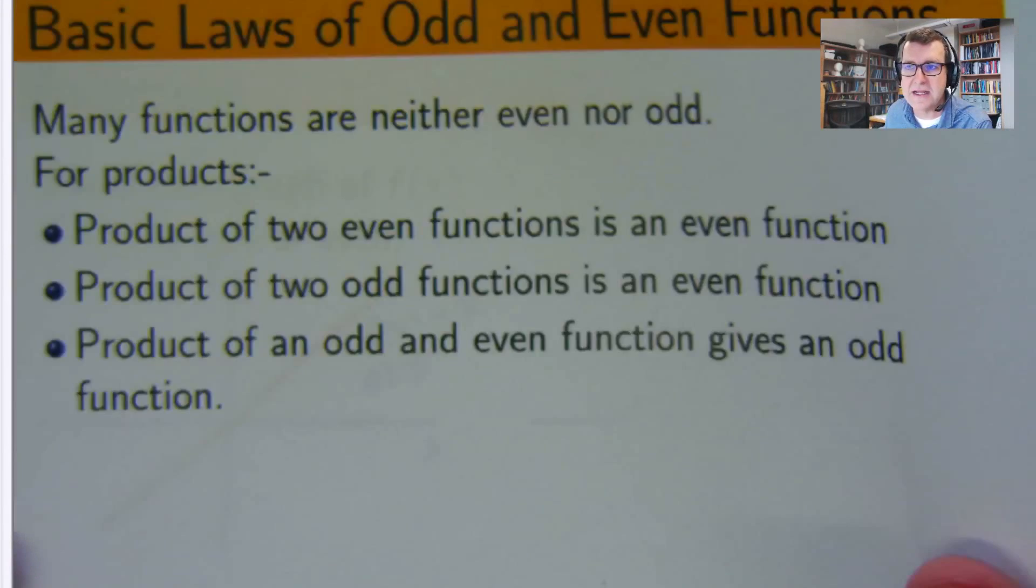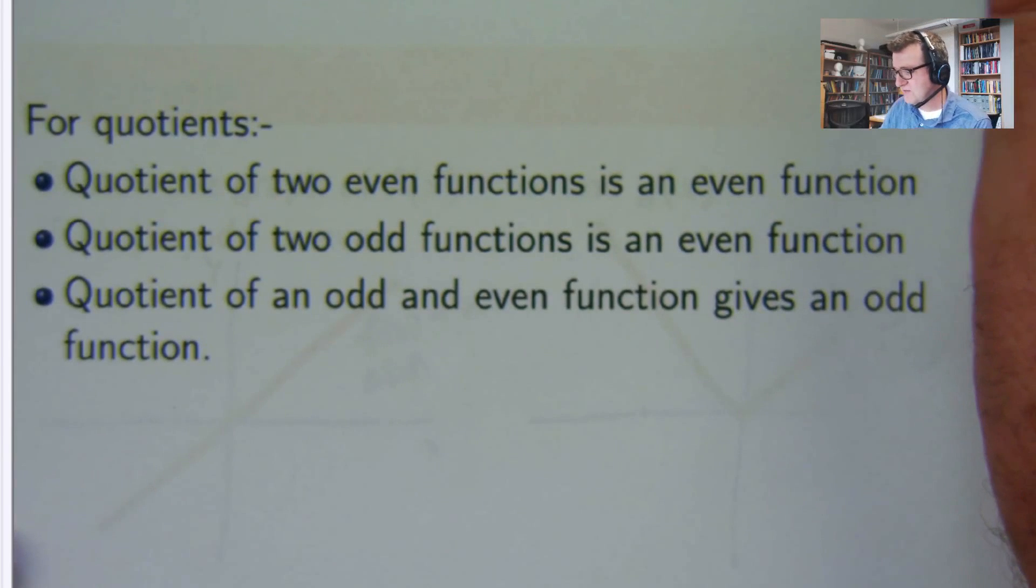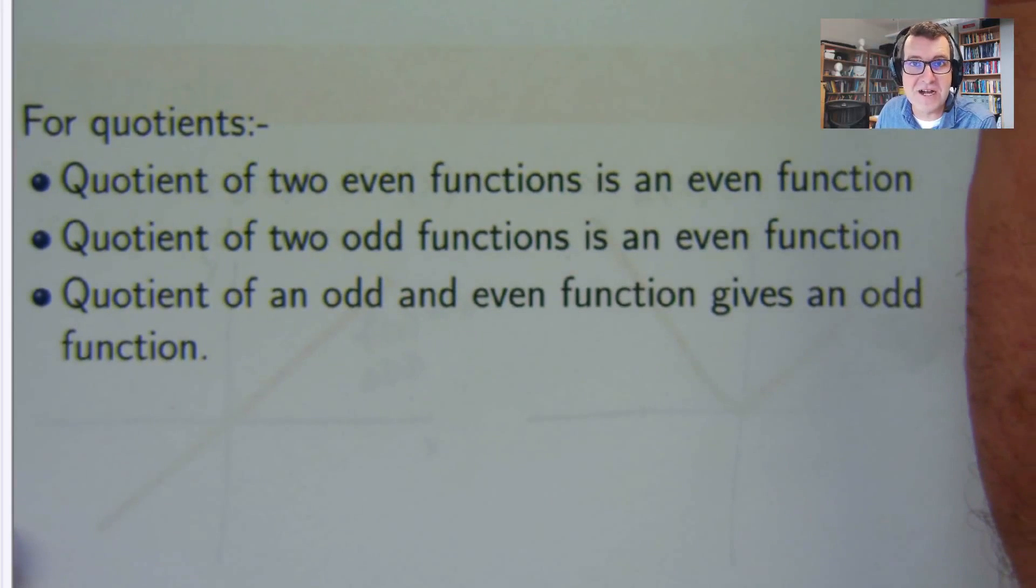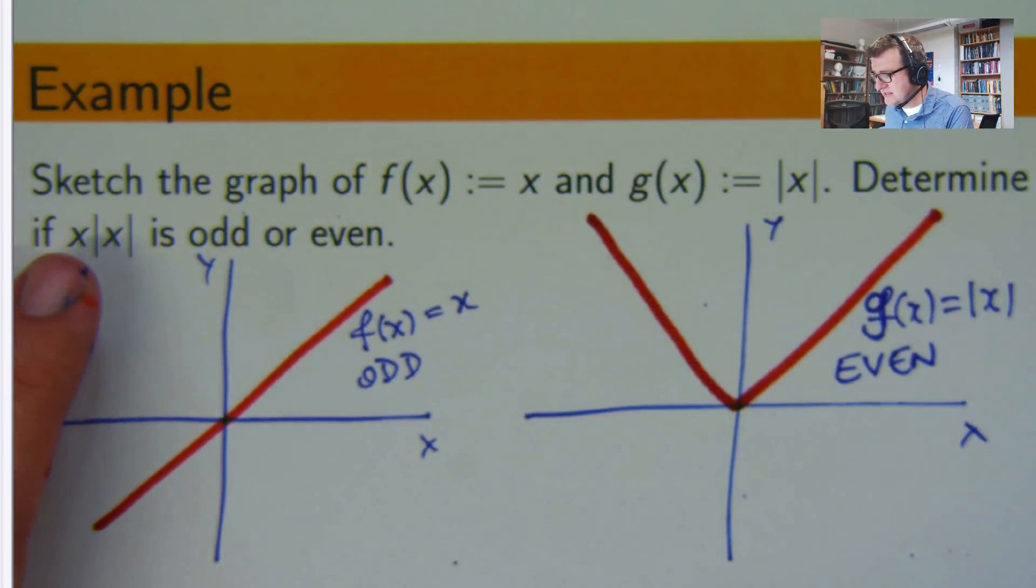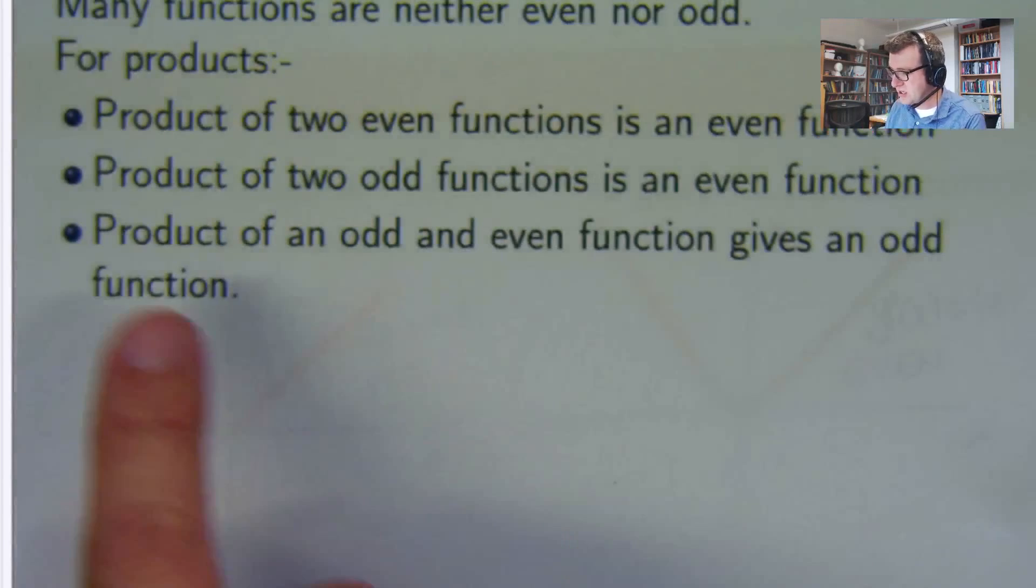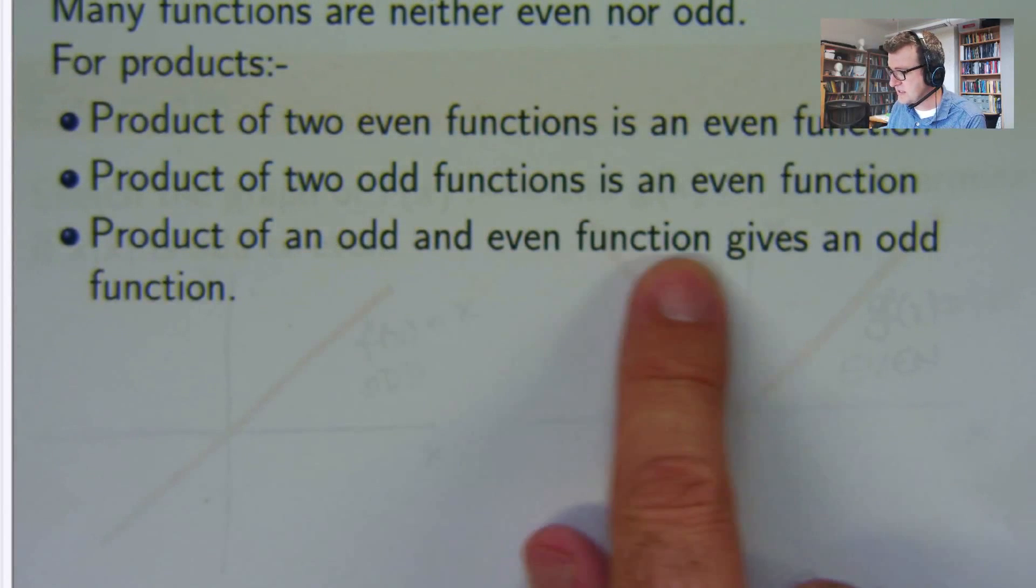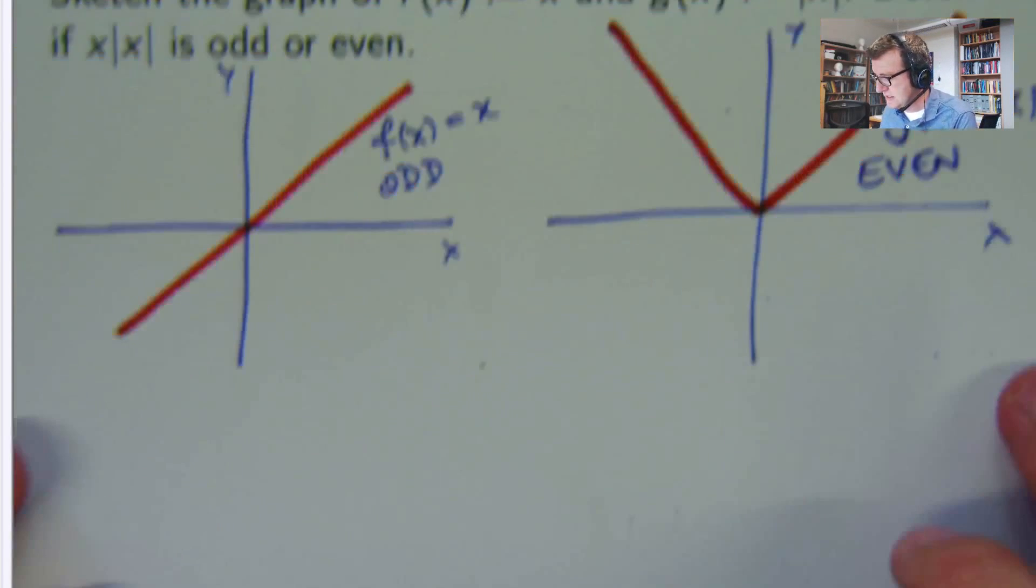Now remember we're talking about functions here, not numbers. When we talk about odd and even functions, we're not talking about numbers. So the product then is an odd function with an even function. So if we go to this third dot point, the product of an odd and even function gives an odd function.